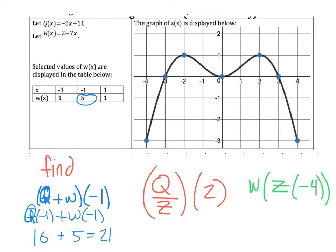Next up, we're finding q over z of 2. So what I'm going to do is find q of 2. I'm going to do this in different colors so we don't get mixed up. So q of 2 is going to be 1, it looks like. And then z of 2 is going to be 1 as well. When I find q over z of 2, I get 1 over 1, which is equal to 1.